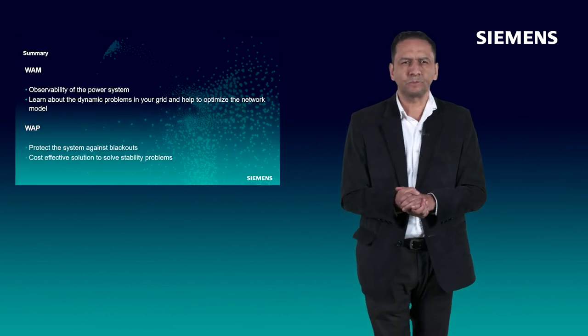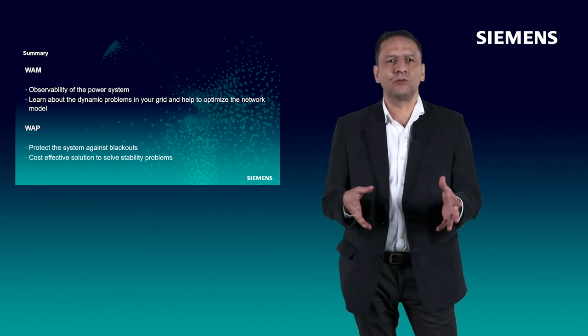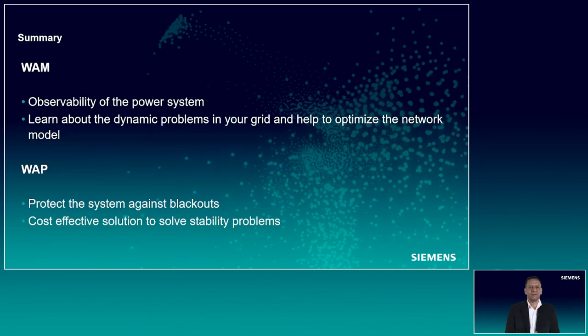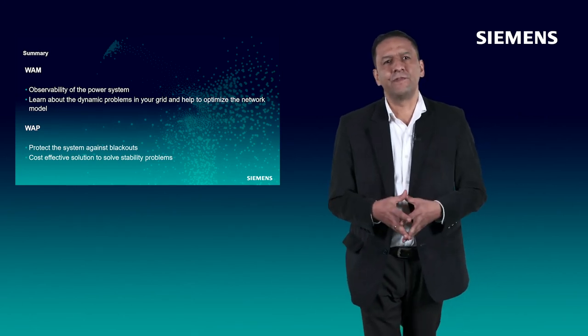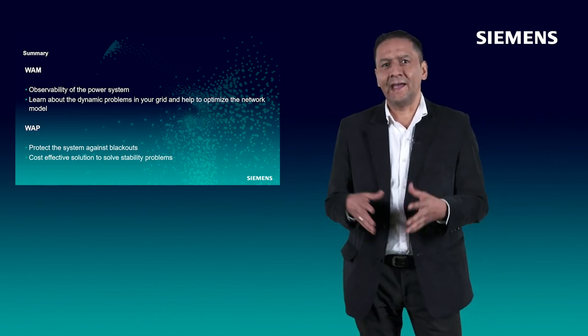Some important topics that I would like to highlight about the two topics I just explained today. For Wide Area Monitoring System applications, the most important topic is to learn about the power system. WAMS offers the observability for phenomena in the network with a much better resolution than the substation automation system and SCADA. With this resolution, it is possible, for example, to have a better understanding of the phenomena and permits an improvement of the network model.